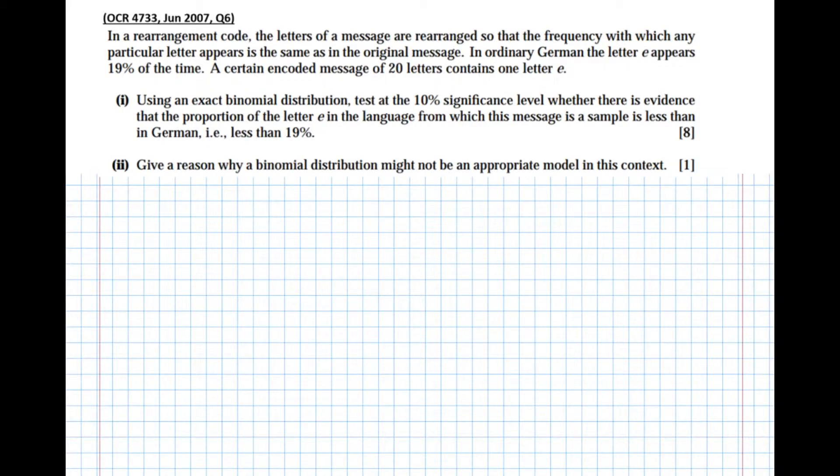The question says in a rearrangement code the letters of a message are rearranged so that the frequency with which any particular letter appears is the same as in the original message. In ordinary German the letter e appears 19% of the time. A certain encoded message of 20 letters contains one letter e.